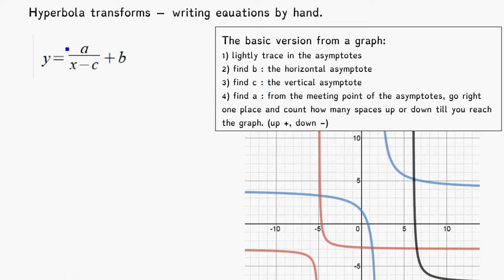So remember from the tutorial just showing in Desmos what these different things do, this guy is going to be your horizontal asymptote, and this means that it's going to be shifting it up-down.